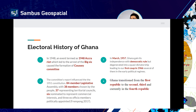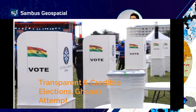Ghana today has moved from the First Republic to the Second, Third, and currently the Fourth Republic. One thing that has run throughout this period is the attempt to always ensure transparent and credible elections. I want to share some of the steps Ghana has taken over the years to introduce and ensure transparent and credible elections.